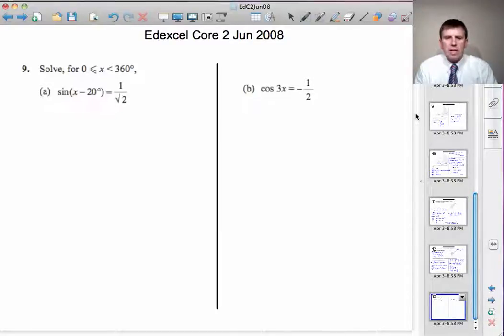Well, we should know that sine to the minus 1 of 1 over root 2 is 45 degrees, but if you don't know that, you can certainly work it out on a calculator. So, let's start by saying sine to the minus 1, 1 over root 2 is equal to 45 degrees. However, because we're looking between 0 and 360, there'll be more than one answer.